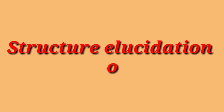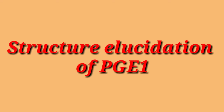In PGE1, PG stands for prostaglandin, E stands for the series of prostaglandin which contains a keto group at C9 carbon atom and hydroxyl group at C11 carbon atom, and 1 stands for the one double bond in the side chain.